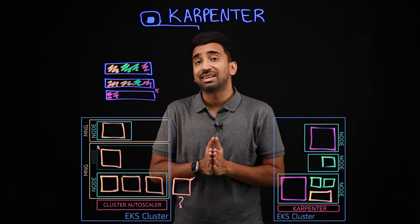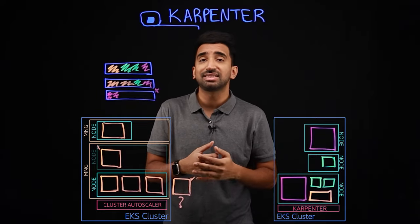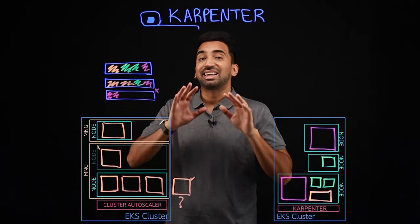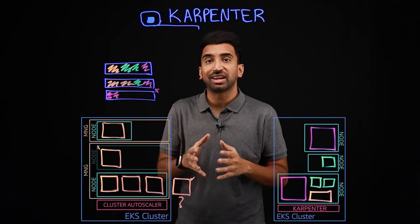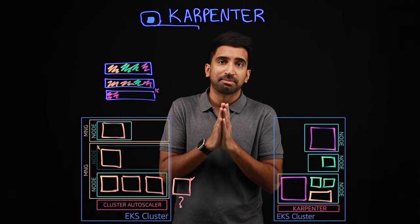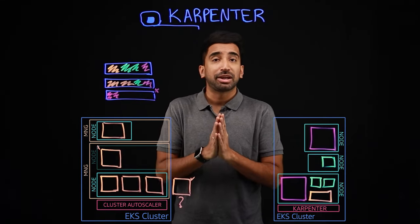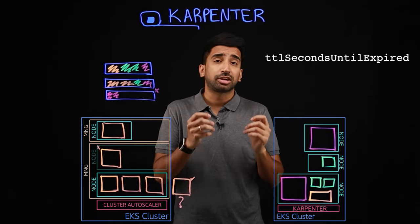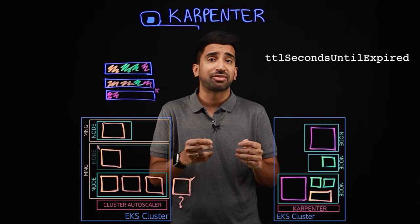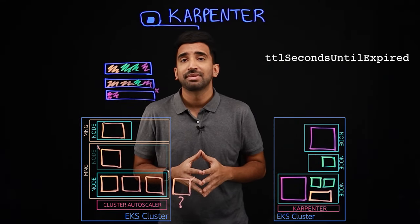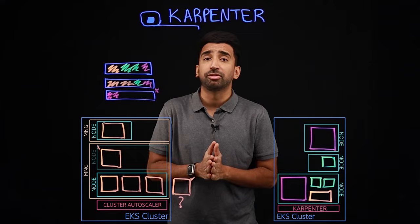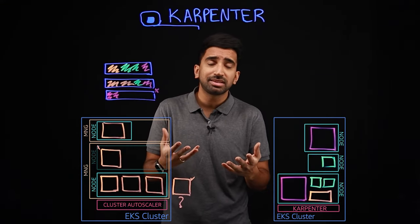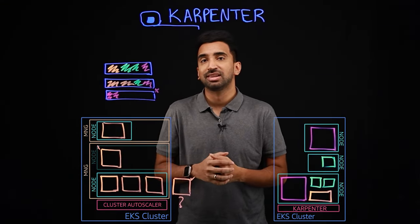Karpenter also makes it easier to use Spot and Graviton instances, which can also lead to lower costs. There's also a cool feature to keep your nodes always up to date: by using a specific parameter, you can tell Karpenter to terminate nodes after a set amount of time, and they'll automatically be replaced with newer nodes running the latest AMIs — Amazon Machine Images.